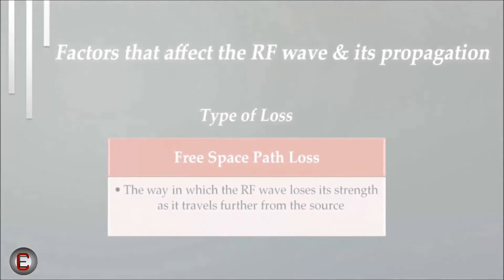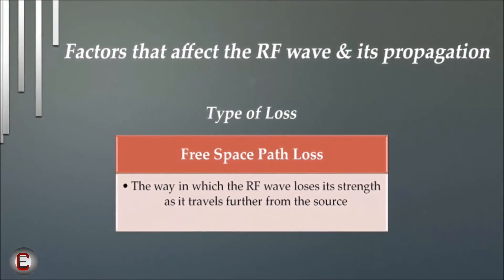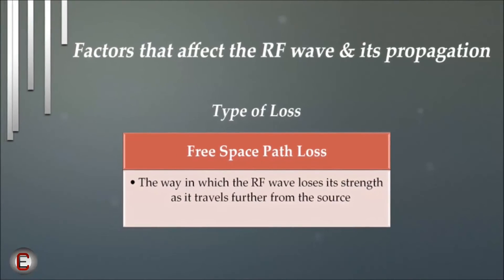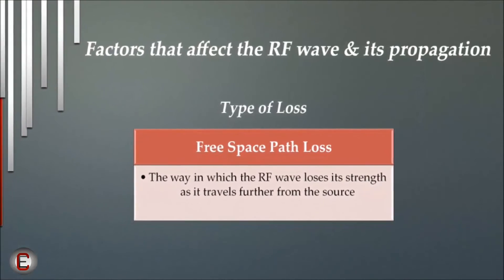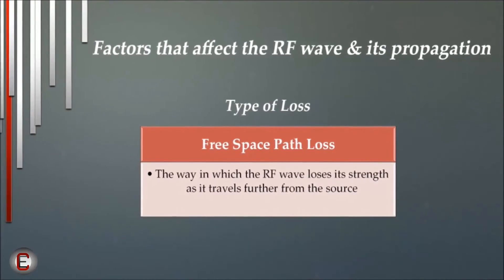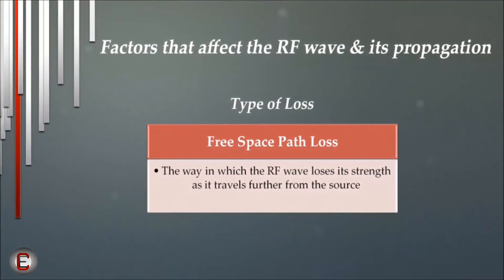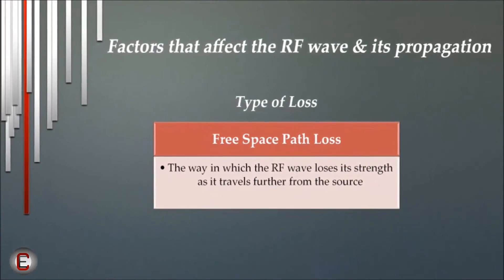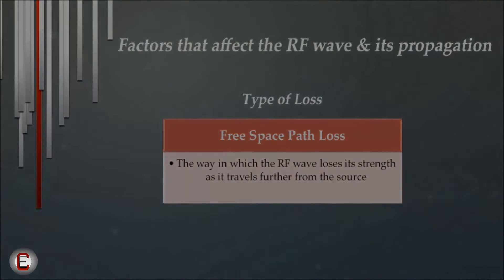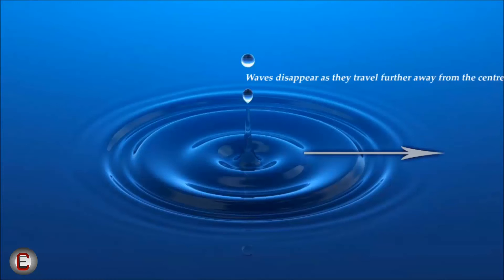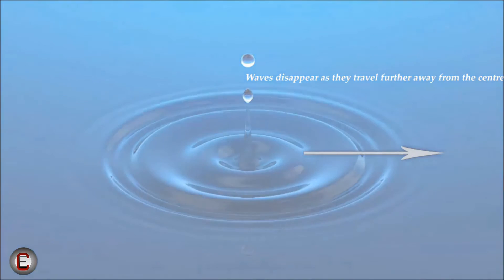A type of loss which is part of each wave that propagates through any medium is called free space path loss. The way in which we lose our strength when we run for long distances is the same as the way the RF wave loses its strength as it travels further from its source. Let's go back to the base analogy of the wave — the ripples in the pond. The waves start to disappear as they travel further from the center.